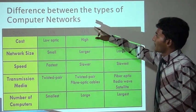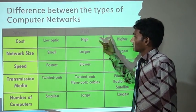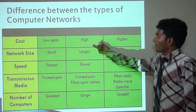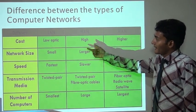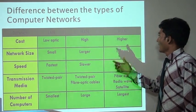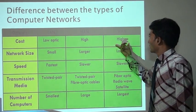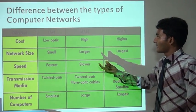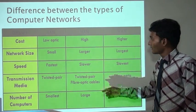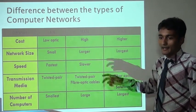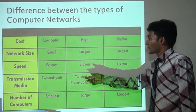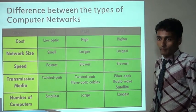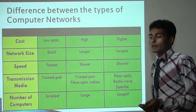Basic difference between computer networks — LAN, MAN, and WAN. According to cost: the cost of LAN is very low and requires less money. The cost of a metropolitan area network is higher than LAN. The cost of a wide area network is the highest compared to MAN and LAN. For network size: LAN creates a small-size network, while MAN and WAN create larger networks. For speed: LAN provides faster data transmission speed, while WAN and MAN provide slower transmission speed compared to LAN.